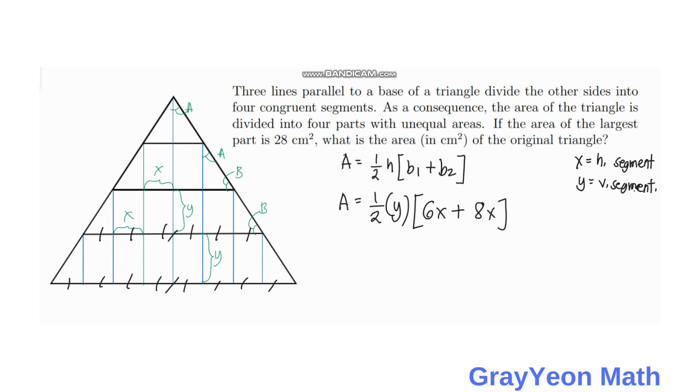And the area is 28 square centimeters is equal to one half times y times 14x. So we have 14 divided by 2 is equal to seven and 28 if we divide this 28 by 7 and this by 7 we have 4 is equal to xy.